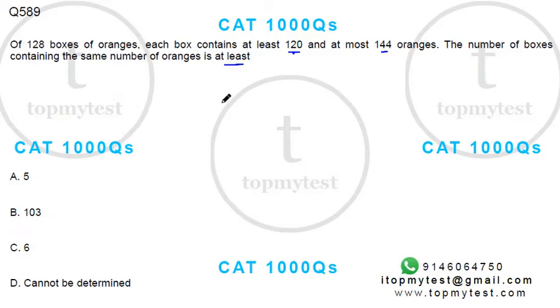So I will try to distribute the oranges to different boxes. Different boxes will have different numbers of oranges. Each box can have between 120 to 144. So let's try: box 1 I will put 120, box 2 I'll put 121.